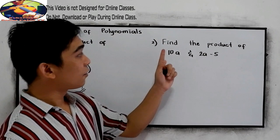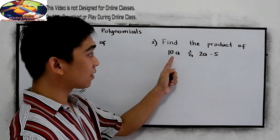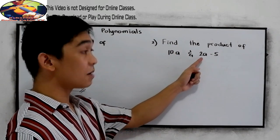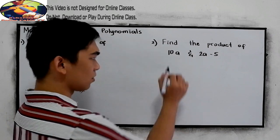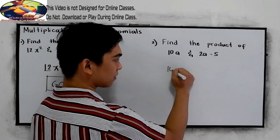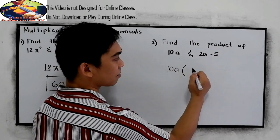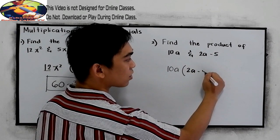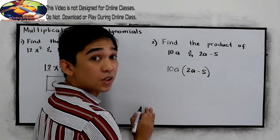Next, find the product of 10a and 2a minus 5. So, find the product, 10a times 2a minus 5. So distribute: